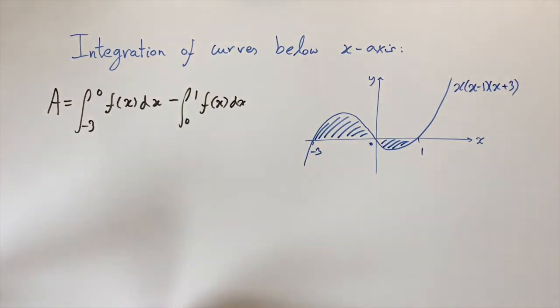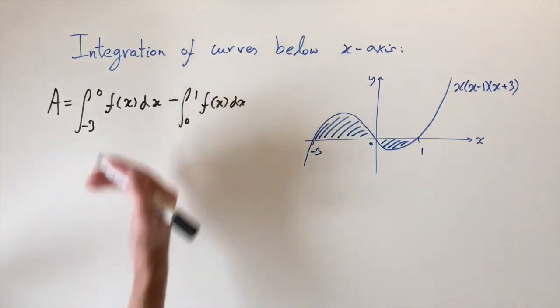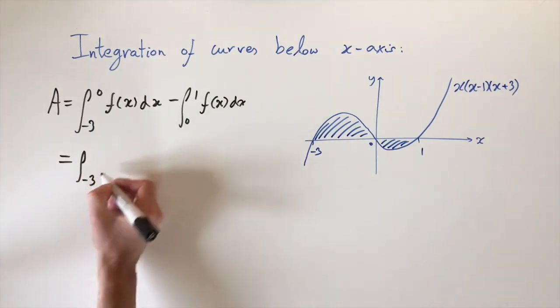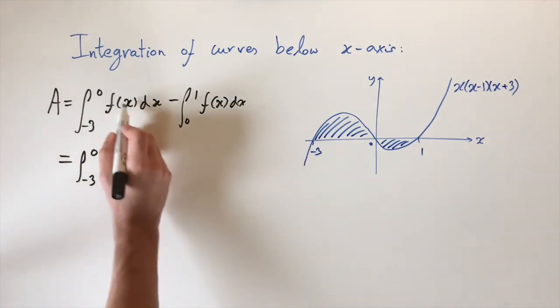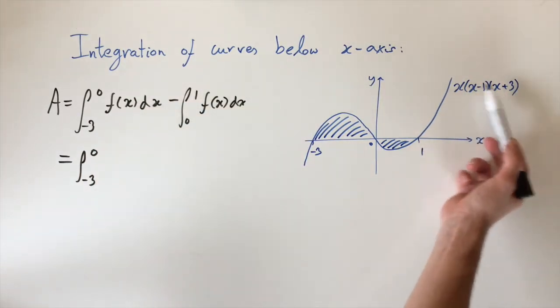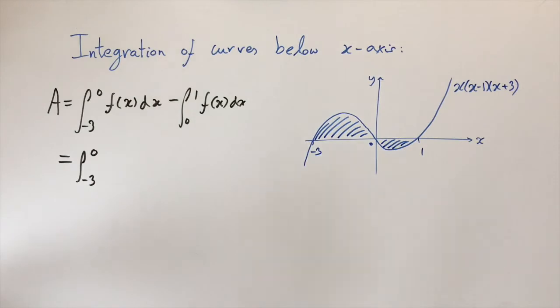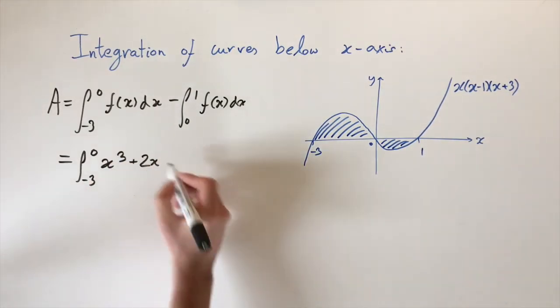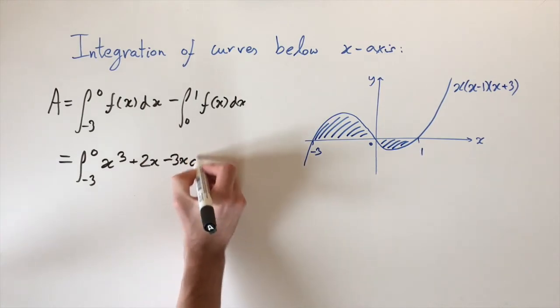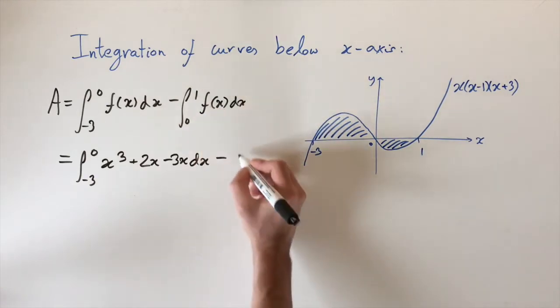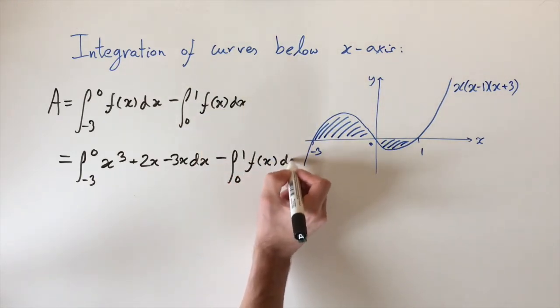So the exact calculations of the integral aren't too interesting. I'll just give you an outline of how this works. Integral between minus 3 and 0, so to integrate f which is this cubic, it's easier to first expand out these brackets. And if you do that, it's going to come out to be x cubed plus 2x minus 3x dx. So this is the cubic expanded out. And then it would be the same for this integral except the limits are different. So I'll just write f of x again dx.